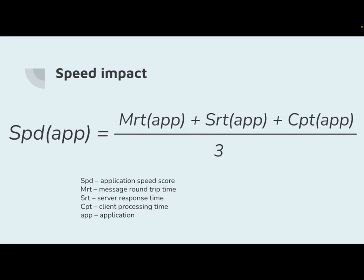When considering the speed of an instant messaging application, we distinguish the following factors: messaging round trip time — the time it takes for a message to be sent from one user to another and for an acknowledgment to be received; server response time — the time it takes for the server to receive, process incoming messages, and send responses back to clients; and client processing time — the time it takes for the client to receive and process incoming messages before displaying them to the user. All three factors are considered with equal priority, and a high-level formula to calculate the speed score is presented on the slide.